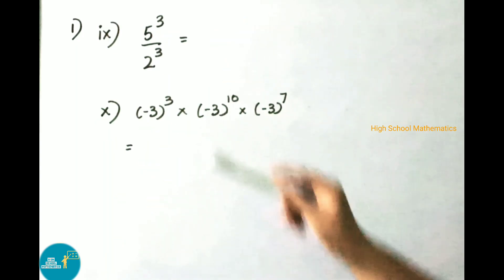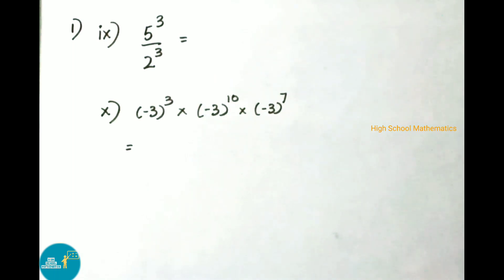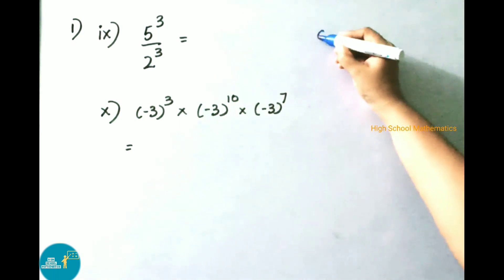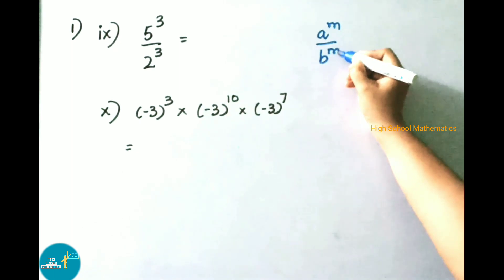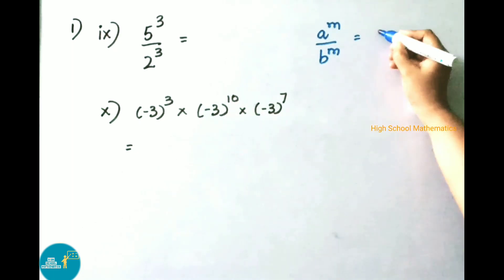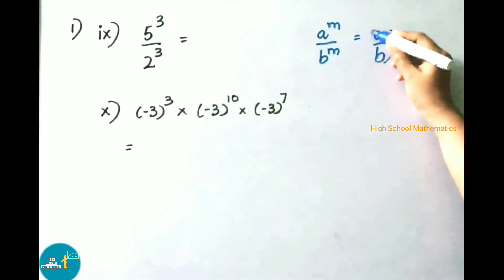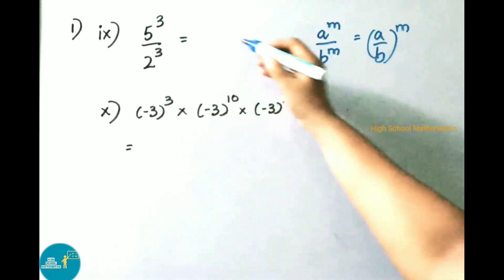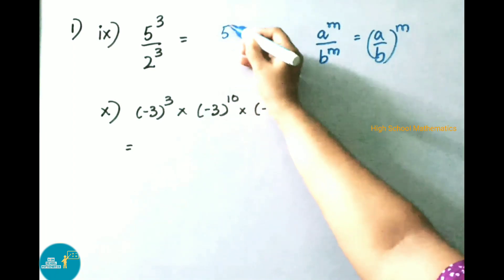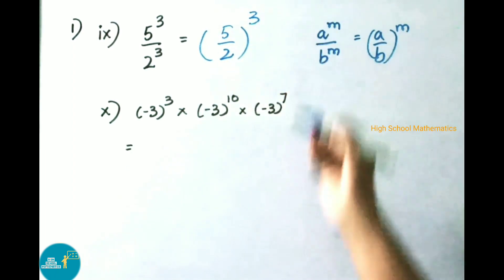Ninth sum: 5 power 3 by 2 power 3. It is looking like the formula a power m by b power m, that equals to a by b whole power m. So it can be written as 5 by 2 whole power 3.